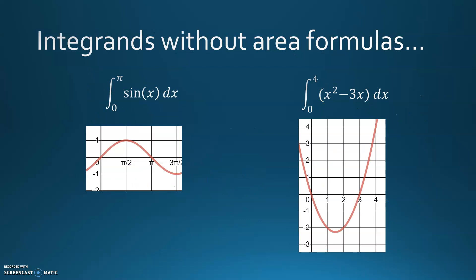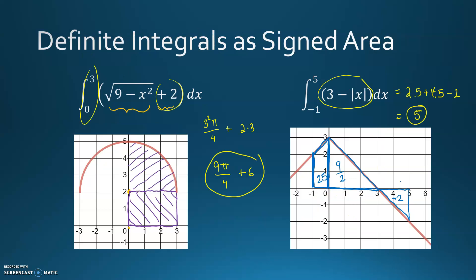But here's the challenge: sometimes we have integrands that, even if we graph them carefully, we don't have area formulas for. If we graph the sine function, that shape doesn't have a nice area formula — it's not quite a semicircle, so we can't use πr²/2. Similarly, for a parabola, we get a semicircle-ish shape and a triangle-ish shape, but not exact ones. We need a different approach.